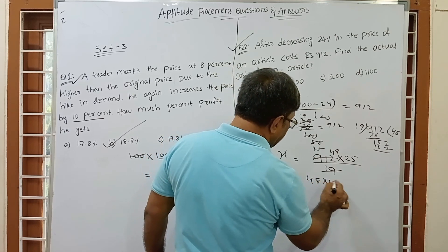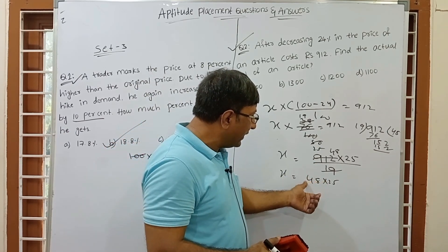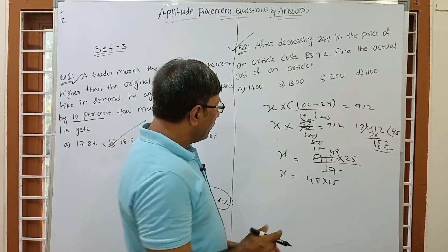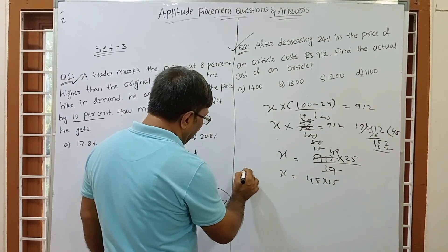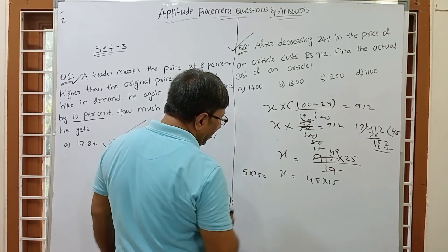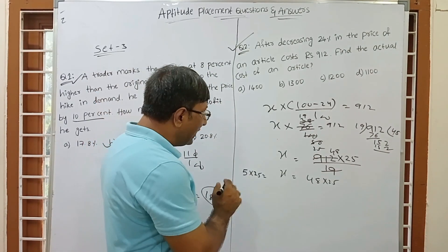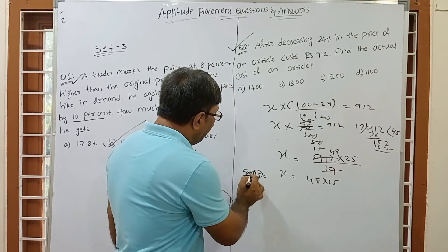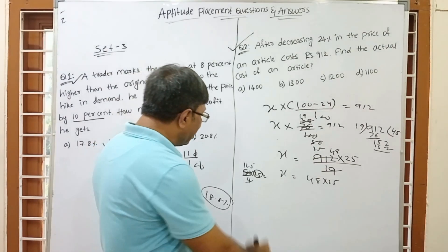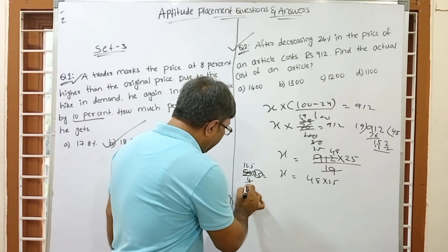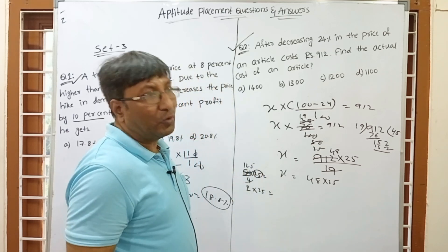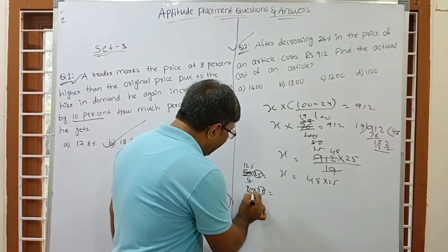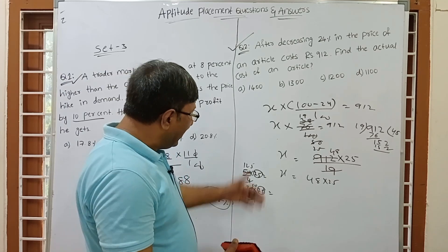So x equals 48 × 25. Now there's a handy trick for multiplying any number by 25: instead of direct multiplication, append two zeros (multiply by 100) and then divide by 4. For example, 5 × 25 — write 500 and divide by 4 to get 125. Similarly, 2 × 25 — write 200, divide by 4 to get 50.